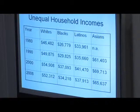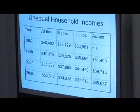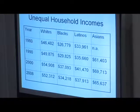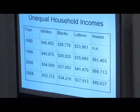In terms of household incomes, there are dramatic differences. The average white household makes $52,312, while black-headed households make $34,218. Looking historically, that gap has been consistent, although there was some progress made between 1990 and 2000.